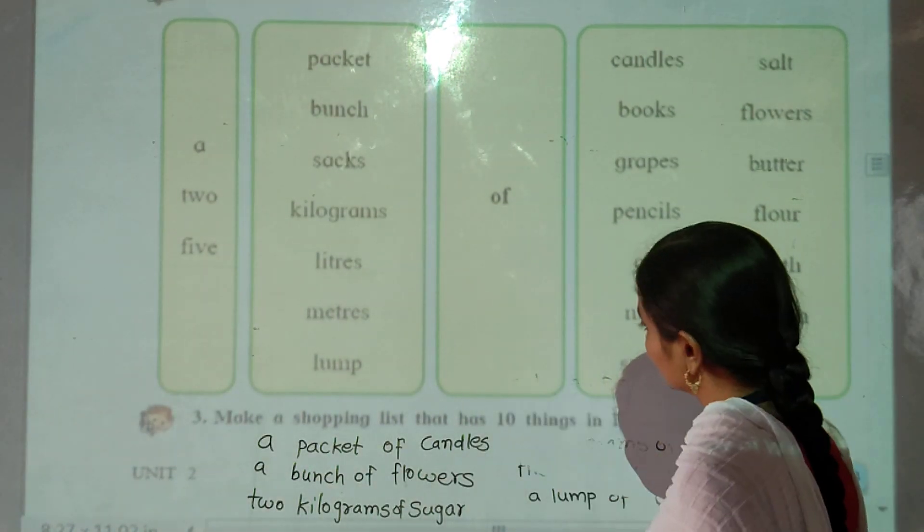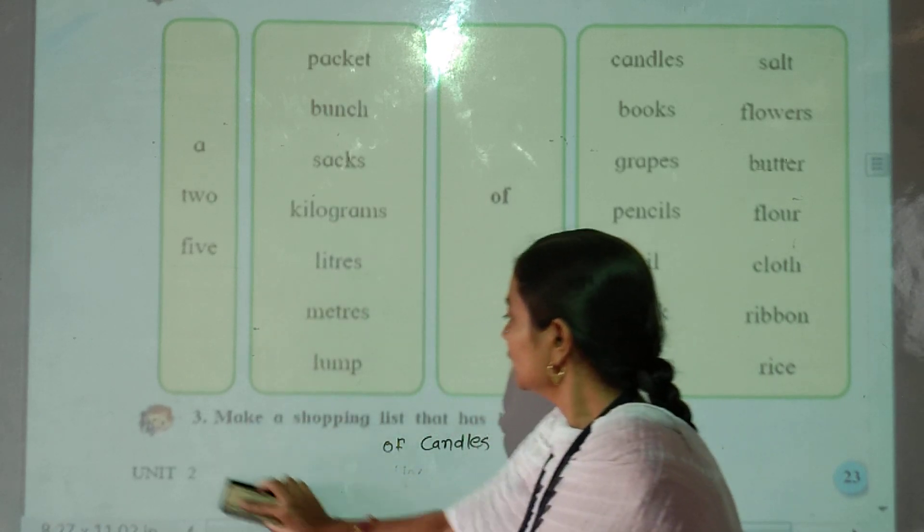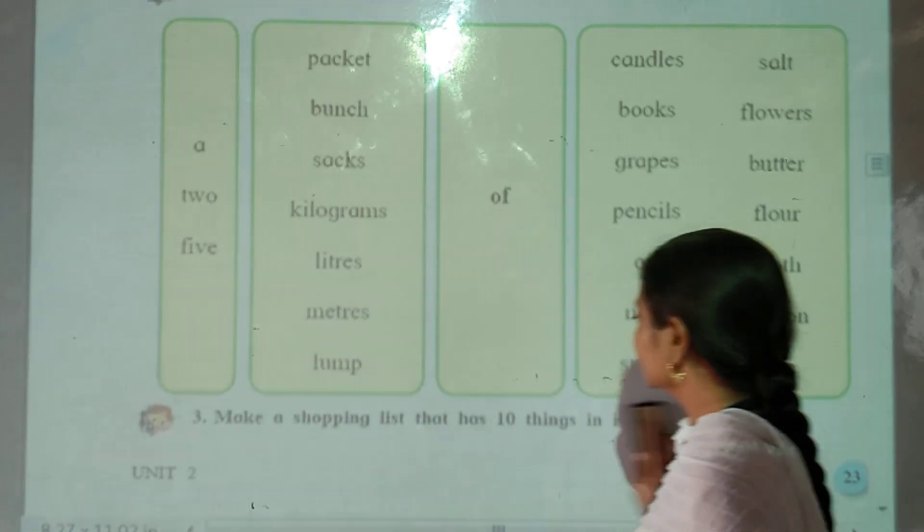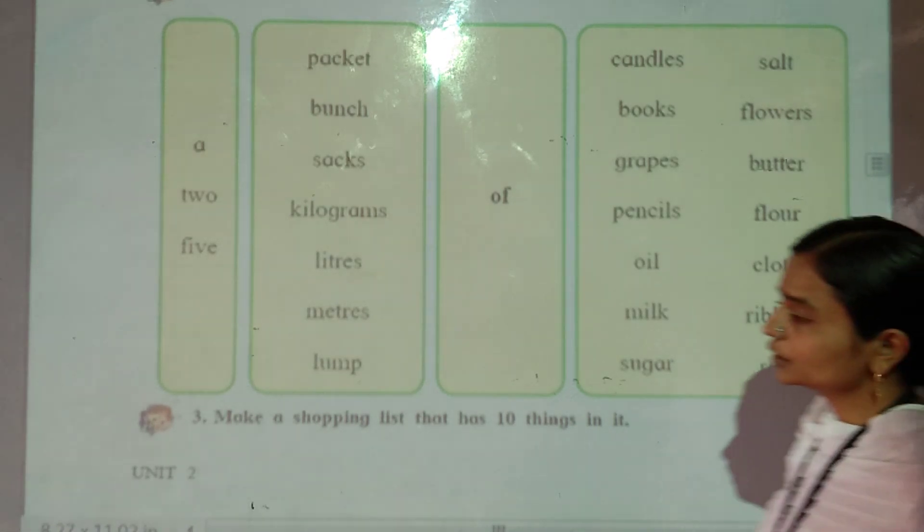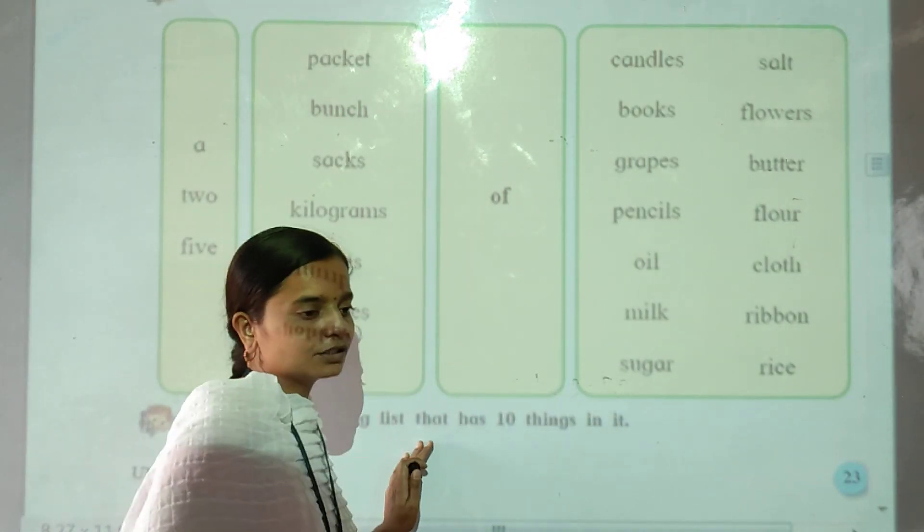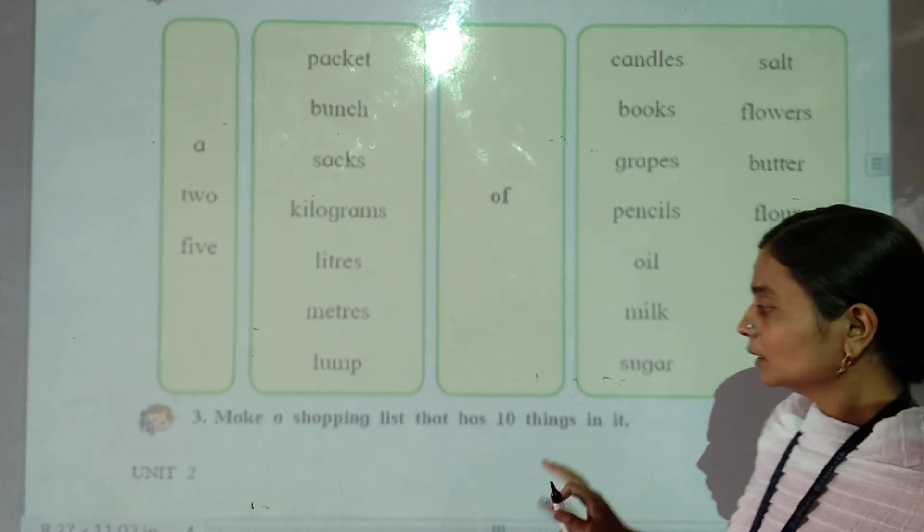Next, number three. Make a shopping list that has 10 things in it. Shopping list tayar kare chai.